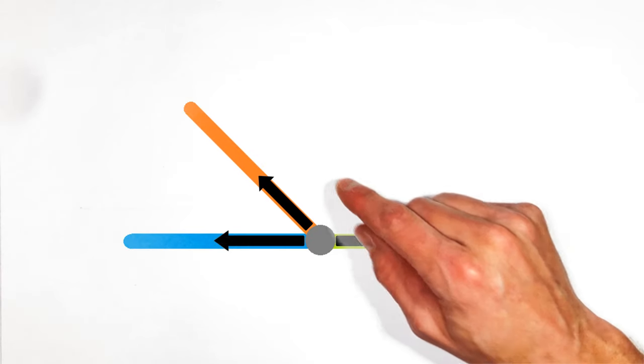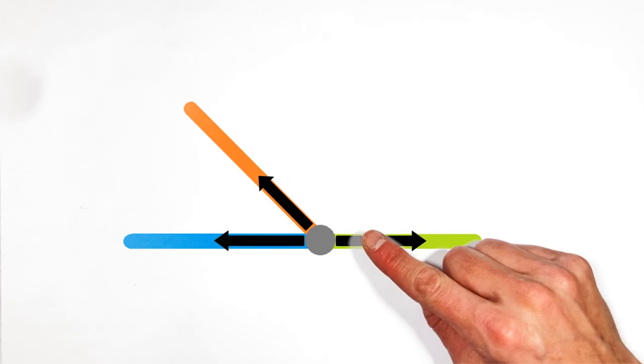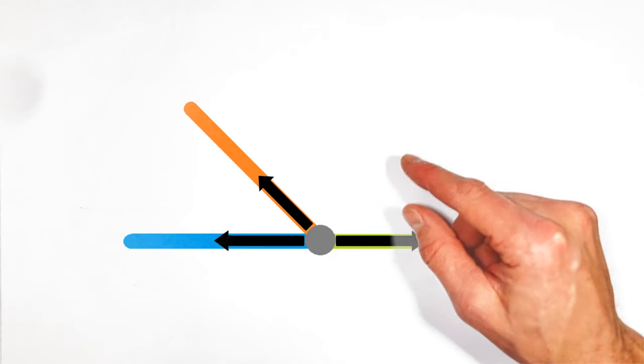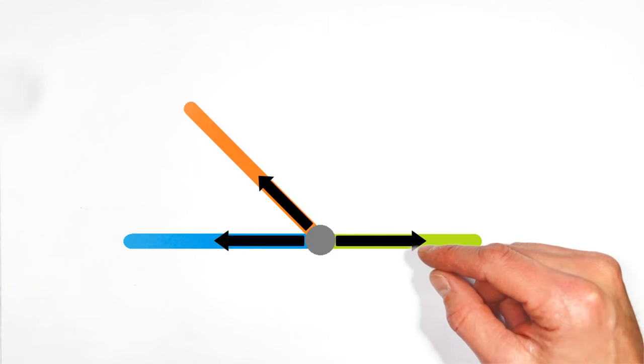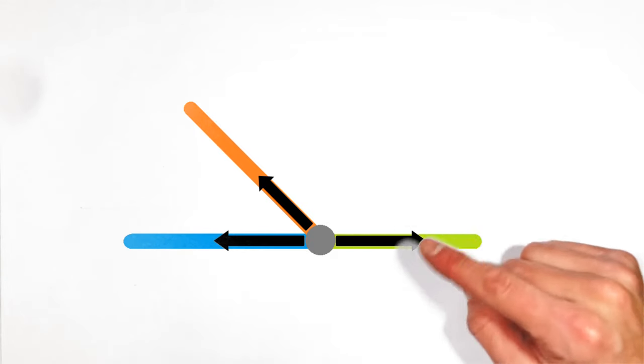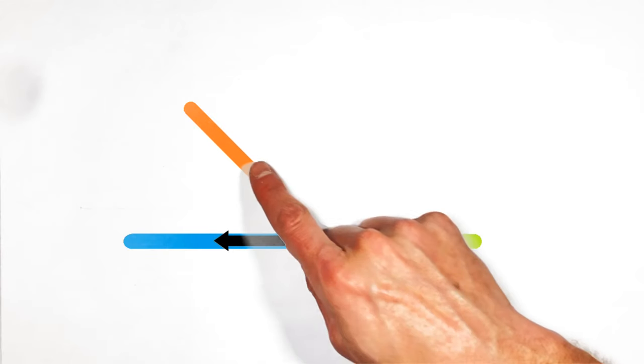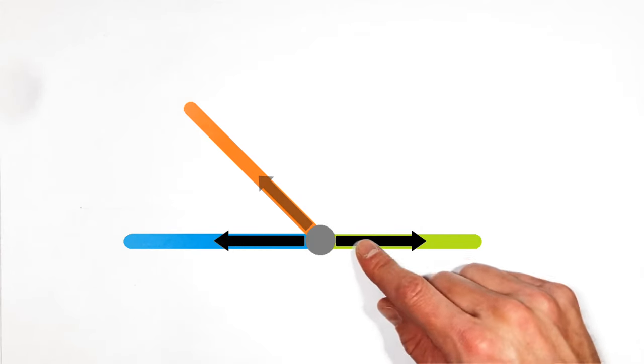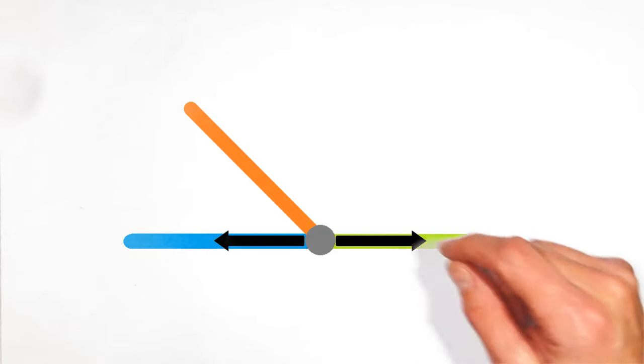So any force on this joint from this angled member is going to act at least partially in the y-axis. But there's nothing to counteract that force. What that means is we can't have any force in this member right here. It's a zero-load member.